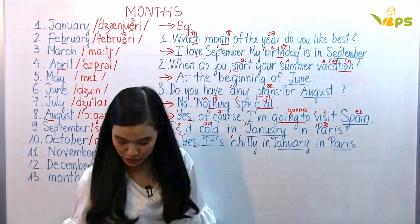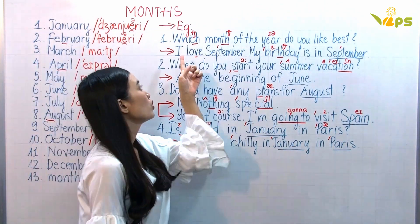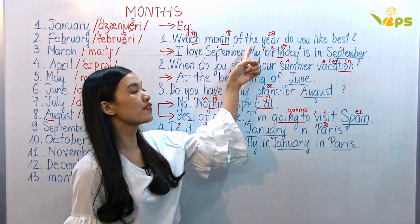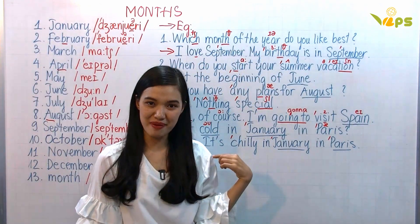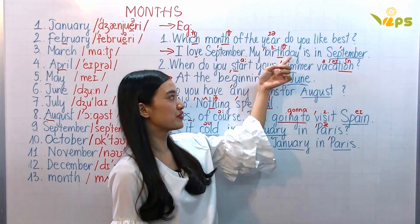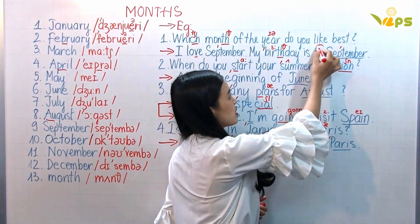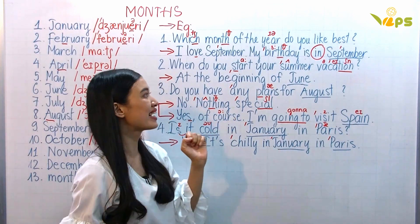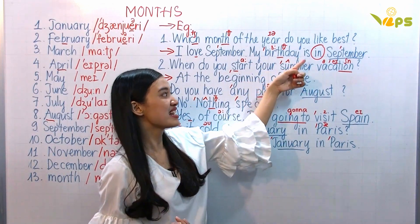Now let's go to some questions and answers. Which — remember this is 'ch' — which month of the year do you like best? I love September. My birthday is in September. Remember, before the month we use the preposition 'in,' not 'on' or 'at.' So: I love September because my birthday is in September.